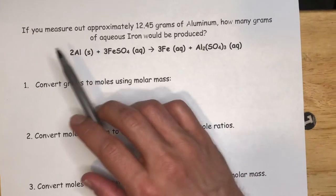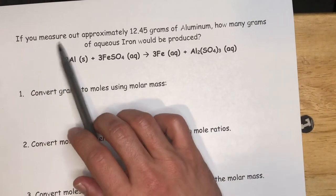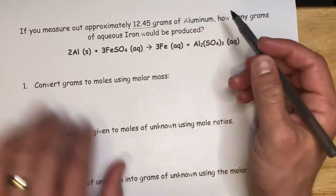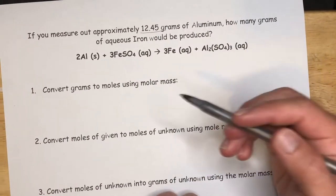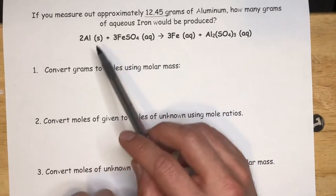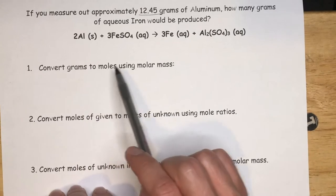So let's do a couple example problems to talk about how we go from grams to moles using mole ratios to figure out how much would we make of a product in a reaction if we start with a certain amount of grams. In this example, we're looking at this question. If you measure out approximately 12.45 grams of aluminum, how many grams of aqueous iron would be produced? So there's three steps in this we're going to take.